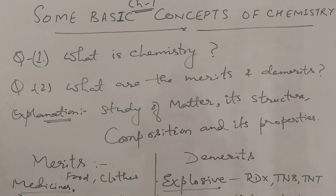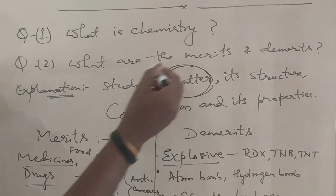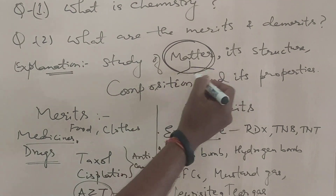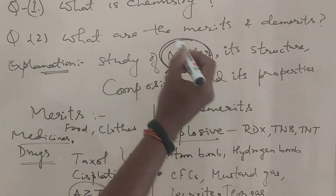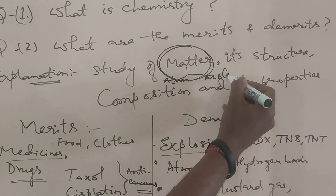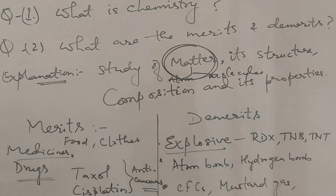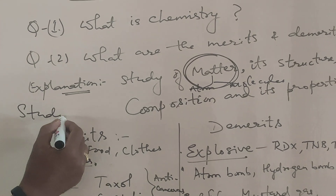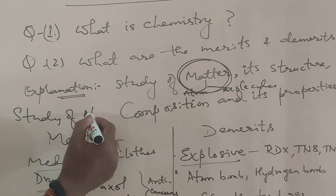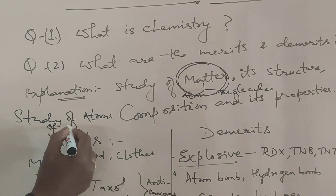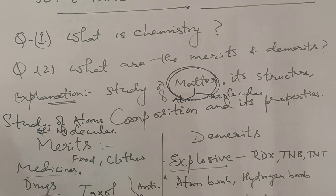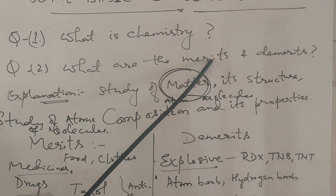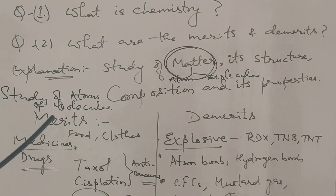Matter is anything that occupies space and has mass. Matter is made up of atoms and molecules. So we can say that chemistry is the study of atoms and molecules.